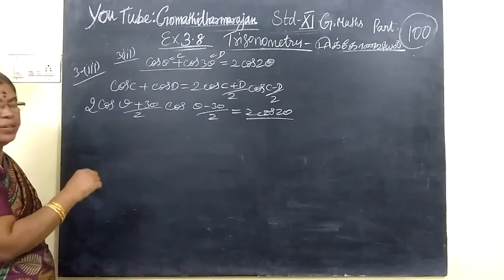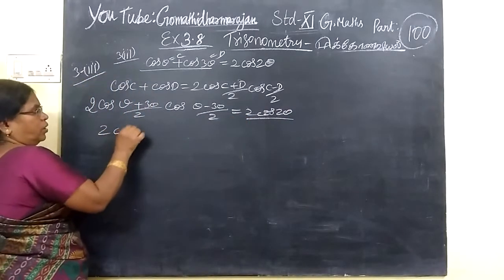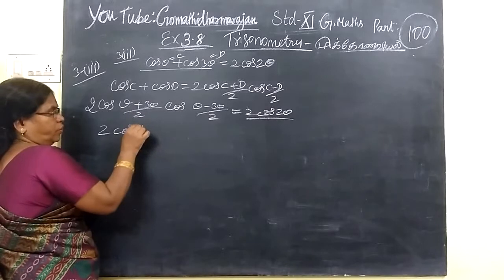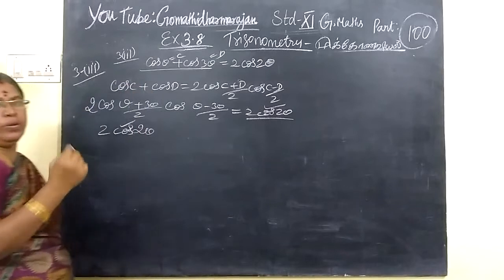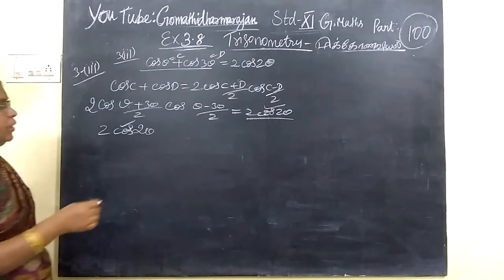This is all the trigonometric terms. So 2 cos 4θ/2, 4θ by 2 is 2θ. Here we are writing this, 3 upon 1.